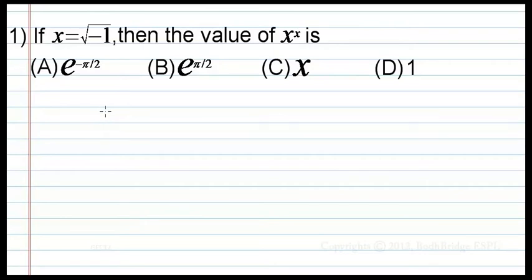For these type of questions, always write root of minus 1 as e power j pi by 2. x equal to square root of minus 1. e power j theta is given as cos theta plus j sin theta.